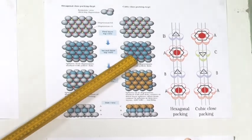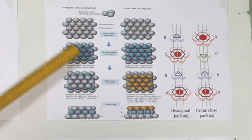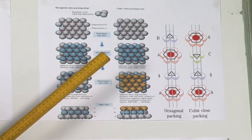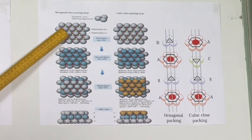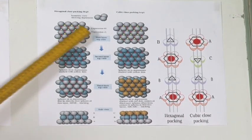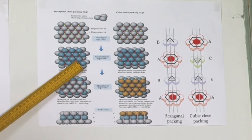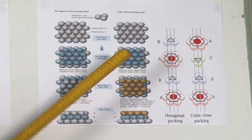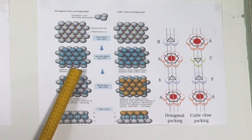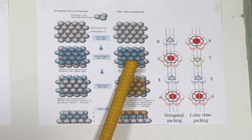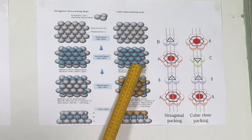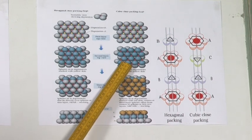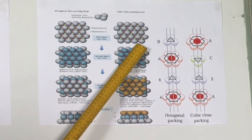When you keep the spheres on the second layer, these blue spheres are in the second layer. Those blue spheres are kept on the voids created by the first layer which are marked yellow. So the blue spheres are on the yellow voids. The red voids are still visible in the second layer, whereas the yellow voids are now covered by the blue spheres.